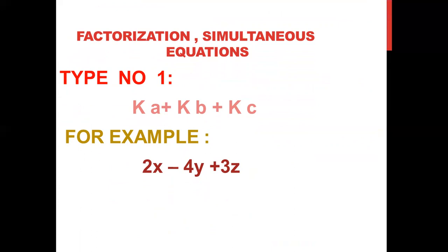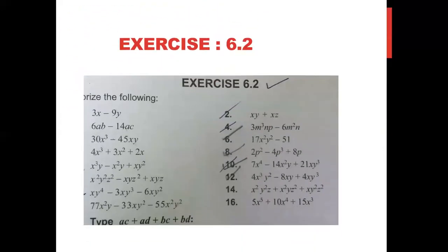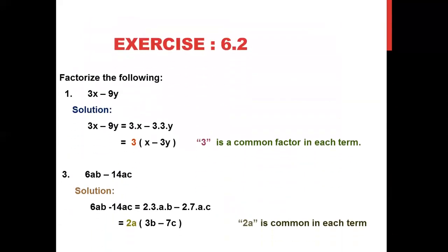For example, we have a question like 2x - 4y + 3z. When you compare this with the form Ka + Kb + Kc, it means 2 or 3 terms are given and you make the factor of each term, then take the common from it. Exercise 6.2: Factorize the following. There are 16 questions in the exercise. I will do some questions for you and the remaining will be your homework. I have pasted the whole exercise so it is easy for you to see the homework questions, since some students don't have the books. This is the easiest exercise of this chapter.